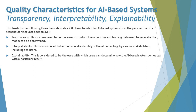Explainable AI leads to three basic desirable XAI characteristics for AI-based systems from the perspective of stakeholders. Transparency is considered to be the ease with which the algorithm and training data used to generate the model can be determined. Interpretability is the understandability of the AI technology by various stakeholders including users. Explainability is the ease with which a user can determine how the AI-based system comes up with particular results. So: how the system was trained, how to understand it, and how it concludes a result.